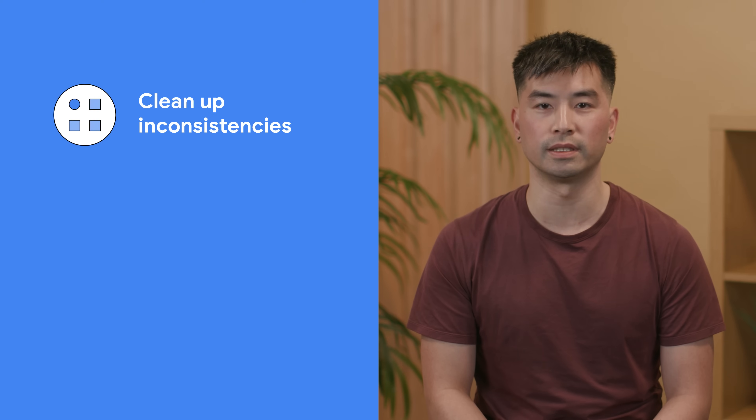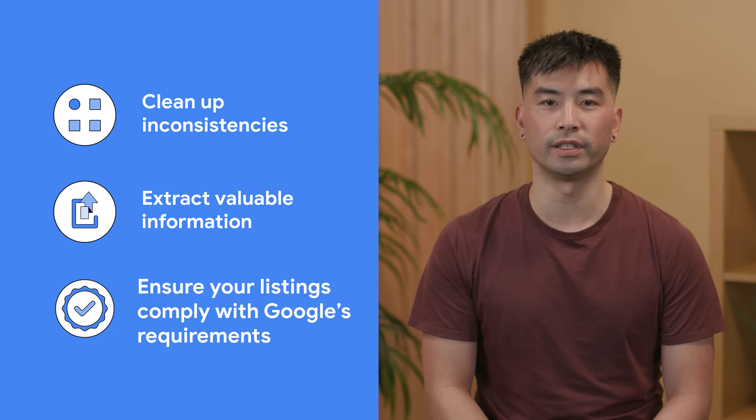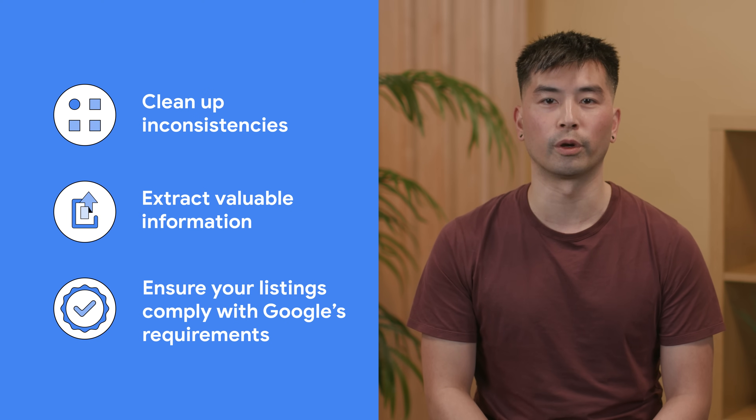While supplemental data sources offer a great way to add specific details to your product listings, another tool called Data Source Rules takes automation to the next level, letting you transform and optimize your entire product data. Think of data source rules like mini programs that clean up inconsistencies, extract valuable information, and ensure your listings comply with Google requirements.